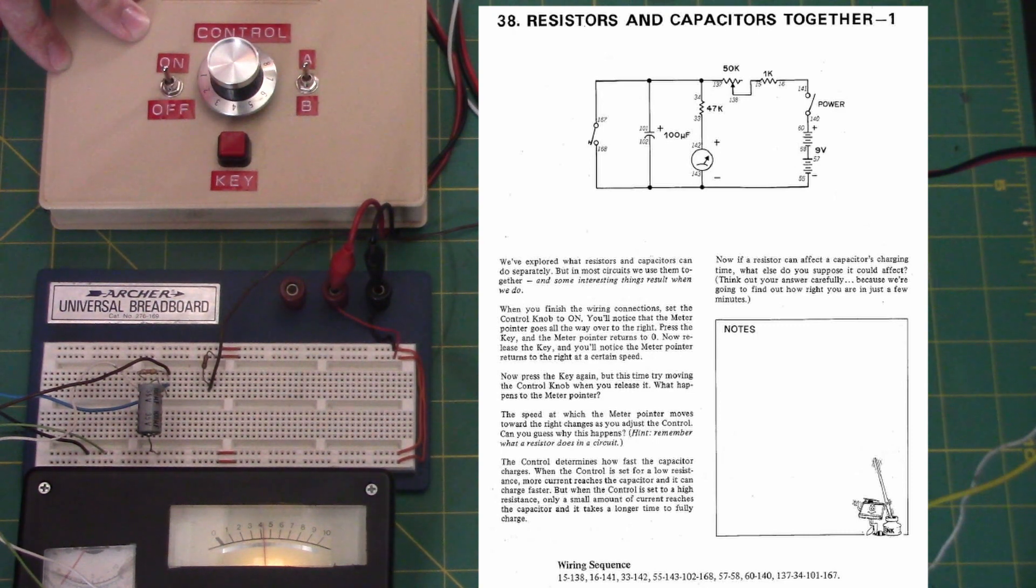But when the control is set to high resistance, only a small amount of current reaches the capacitor and it takes a longer time to fully charge.